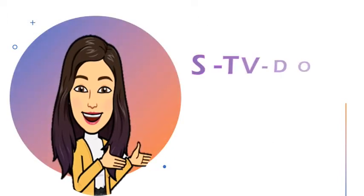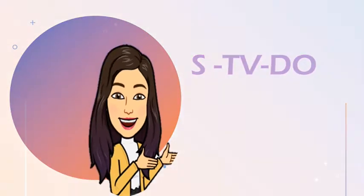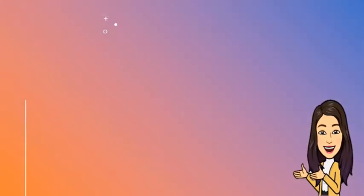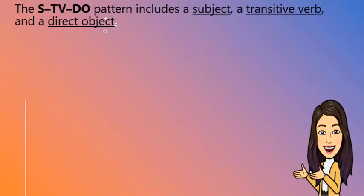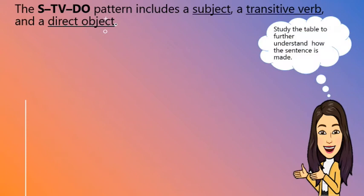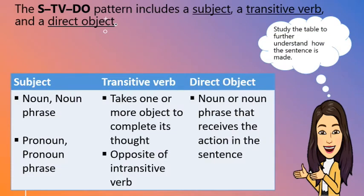Here is the STVDO pattern. The STVDO pattern includes a subject, a transitive verb, and a direct object. Study the table to further understand how the sentence is made. A subject can be a noun or a noun phrase, a pronoun or a pronoun phrase. A transitive verb takes one or more objects to complete its thought, or the opposite of the intransitive verb.